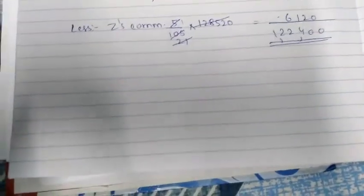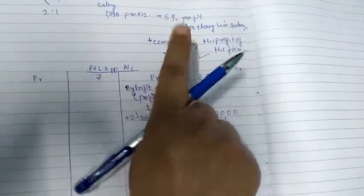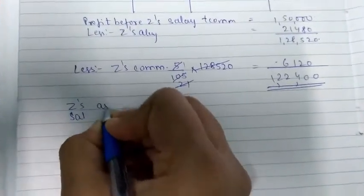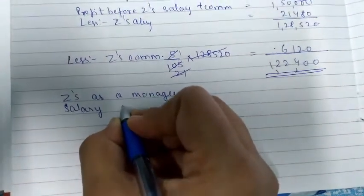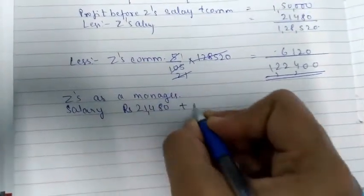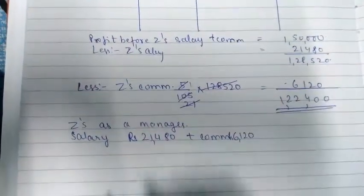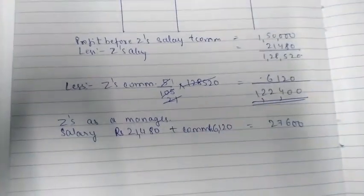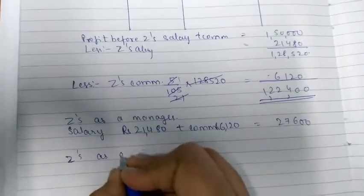Now let's see. Z is a manager. Manager will receive salary and commission. Z as a manager - salary was 21,480, plus commission, which is 6,120. This becomes 27,600.